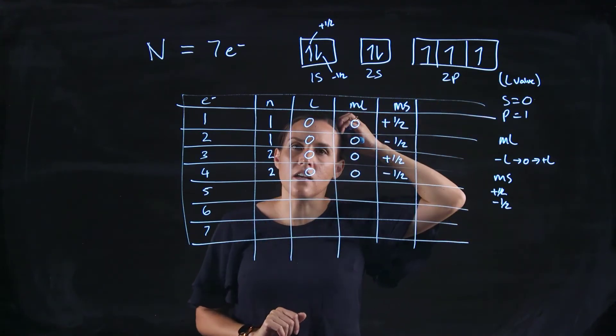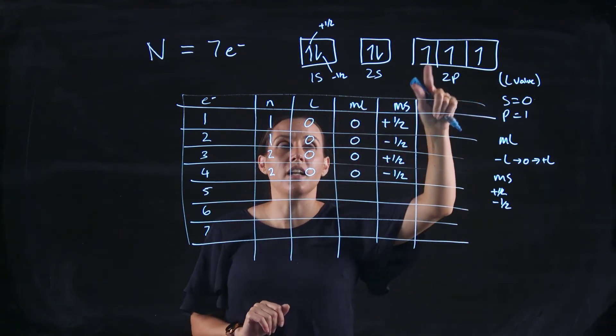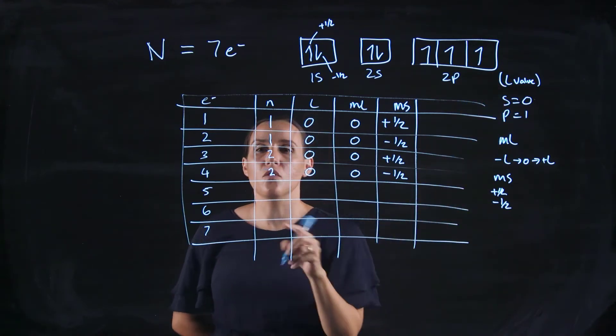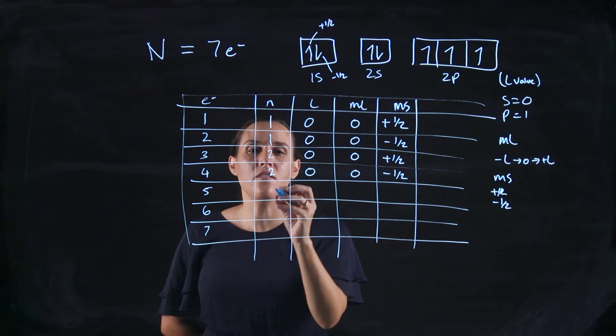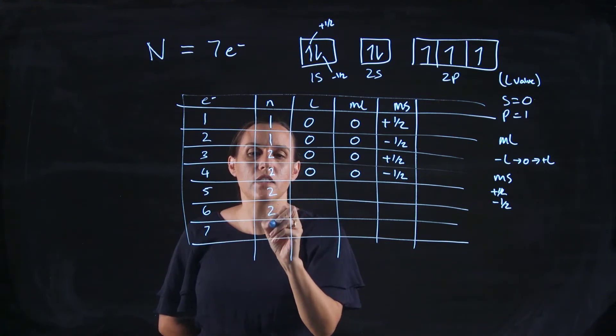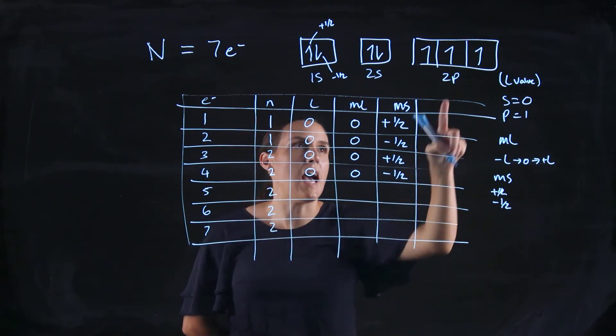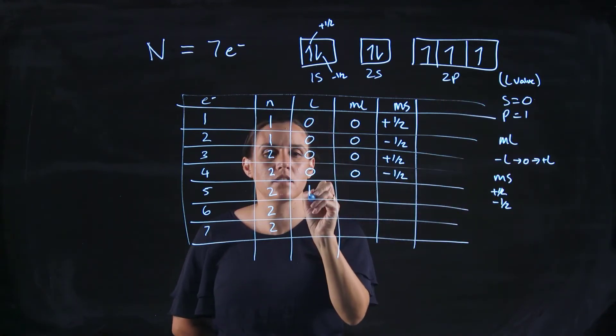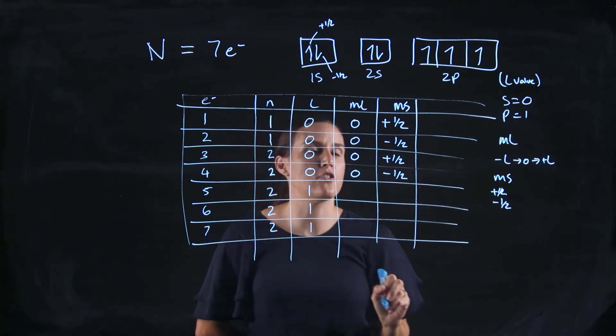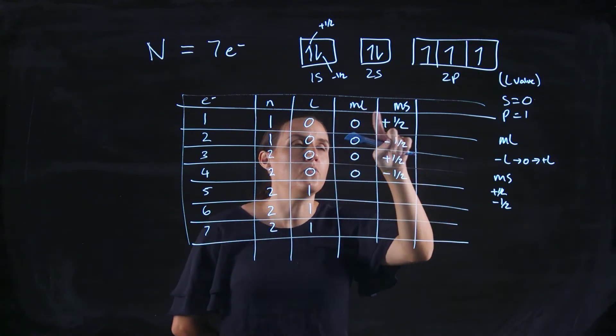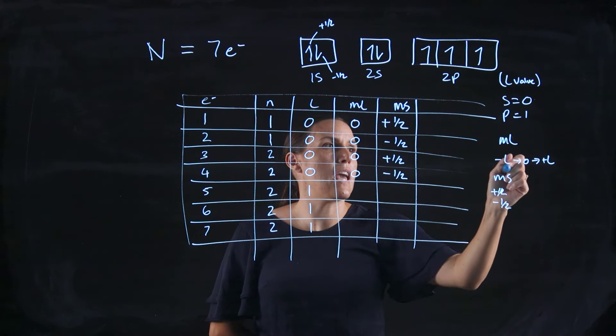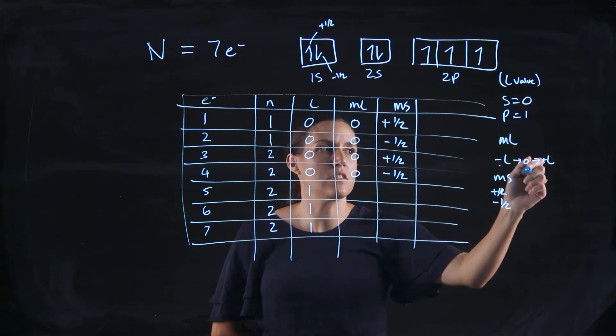When you get into the 2p, following the rules, you should get one electron in each of those 2p orbitals. The energy level or the n value would still be 2 for these next three. The l value is a p, so it will be 1 now. They're all in that 2p. Now the ml would be the designation for each of these. We know that the ml would be minus l through 0 to plus l.